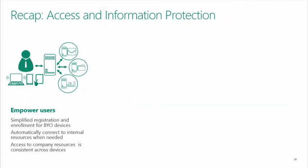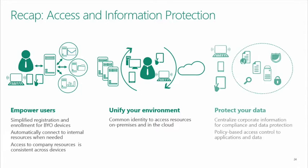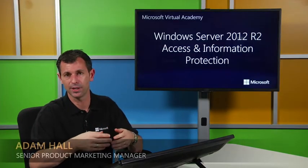Let's do a quick recap. When we looked at empowering users, we showed simple device registration, the enrollment tool for Windows Intune, and the ability to automatically connect to resources through automatic and on-demand VPNs — with a consistent experience across devices. When we talk about the unification of the environment and common identity, we get single sign-on no matter what resources we're accessing. In the next section we'll look at how Work Folders works and how we bring the compliance aspect into the equation. Thank you very much for being part of this Access Information Protection End User Experiences segment.